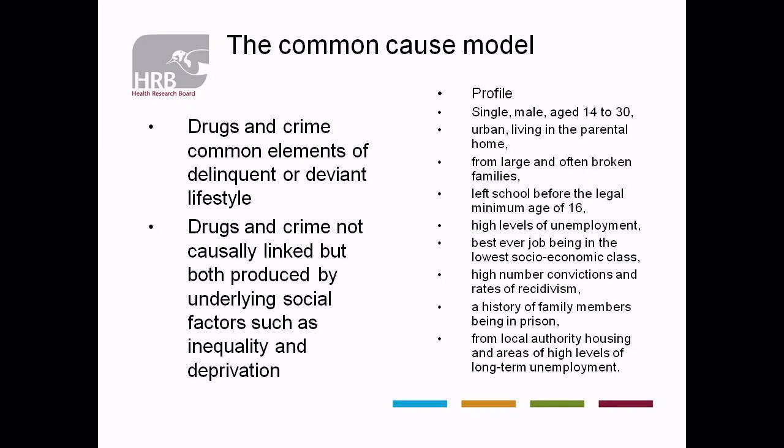And then there's the final model — the common cause model — where drug use and offending behaviour are common factors of perhaps a deviant lifestyle. One doesn't necessarily lead to the other, but they are both consequences of other things. They're not causally linked, but they're produced by underlying social factors such as inequality and deprivation.